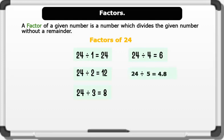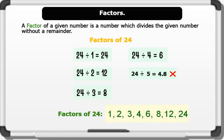24 divided by 5 equals 4 remainder 8. This therefore is not a factor because it has a remainder. Therefore the factors of 24 are 1, 2, 3, 4, 6, 8, 12, and 24. That's wonderful.